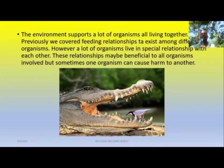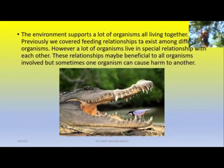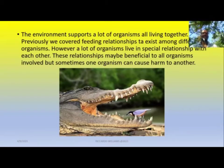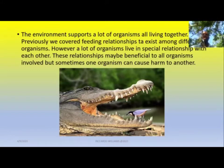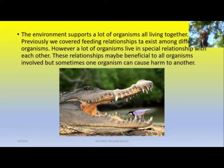The environment supports a lot of organisms all living together. We have been looking at this through a series of videos — starting with the ecosystem, food chains, and food webs — and we see that there is an abundance of organisms existing together. What we covered previously was looking at the feeding relationships that exist among different organisms. However, a lot of organisms live in special relationships with each other, and sometimes one organism can cause harm to another.